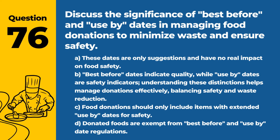Question 76. Discuss the significance of best-before and use-by dates in managing food donations to minimize waste and ensure safety. a. These dates are only suggestions and have no real impact on food safety. b. Best-before dates indicate quality, while use-by dates are safety indicators. Understanding these distinctions helps manage donations effectively, balancing safety and waste reduction. c. Food donations should only include items with extended use-by dates for safety. d. Donated foods are exempt from best-before and use-by date regulations. Answer: b. Best-before dates indicate quality, while use-by dates are safety indicators. Understanding these distinctions helps manage donations effectively, balancing safety and waste reduction. Proper interpretation of these dates is crucial for safe food donation practices.